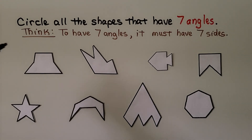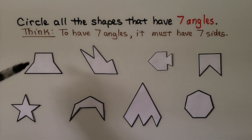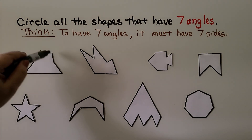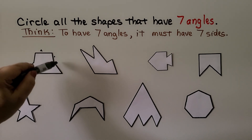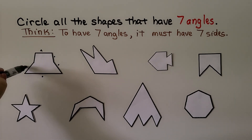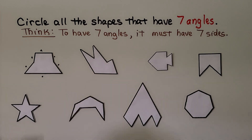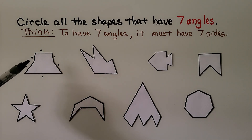This is telling us to circle all the shapes that have seven angles. To have seven angles, it must have seven sides. We can count the sides. This one has one, two, three, four, five, six sides — that means it's going to have six angles. So that's not one of them.